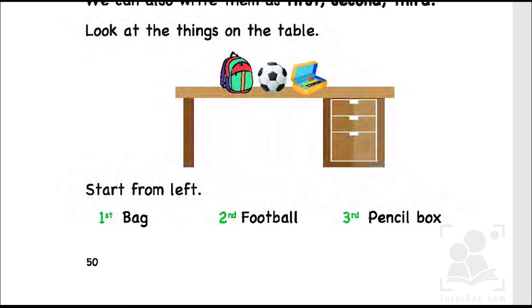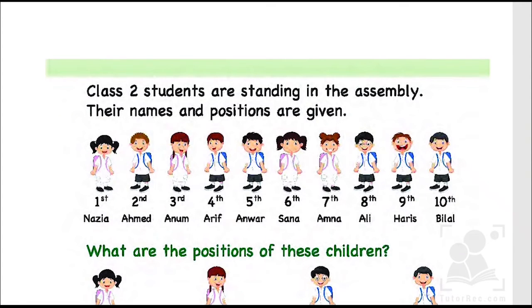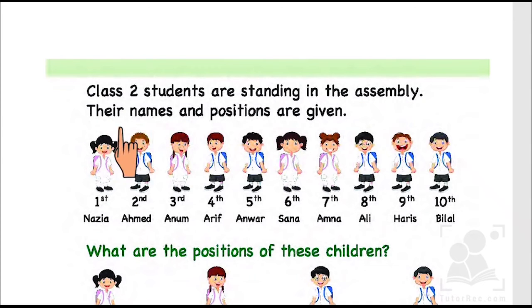Let's move on to the next page. As you can see, kids, there are some kids standing in a row, which means they are showing their positions. Class two students are standing in the assembly and their names and positions are given.